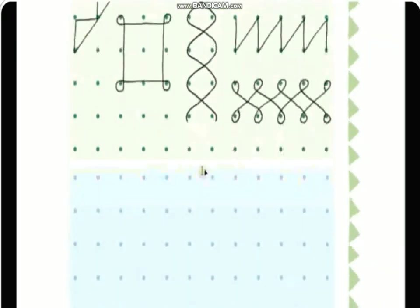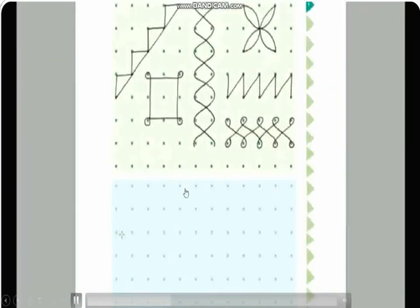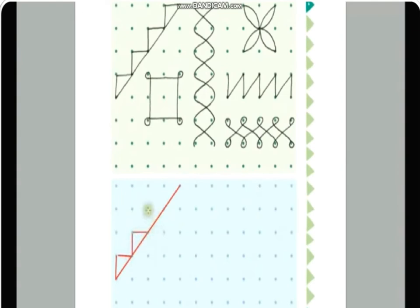Now we will copy the first pattern. I'm starting from the fifth dot, leaving four dots. From this fifth dot I draw a straight line joining the dots. Then I make the next straight line, then the next — see how I am maintaining the distance. If you are drawing in your textbook, use a scale — don't draw directly with your pencil — so that you get a straight line.